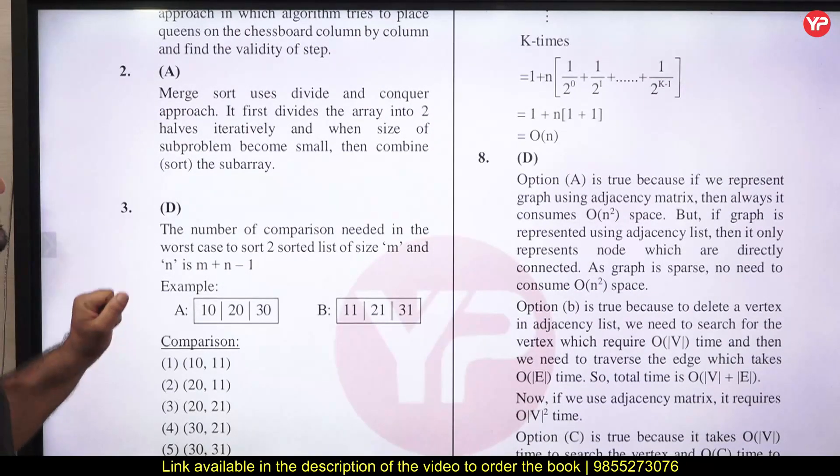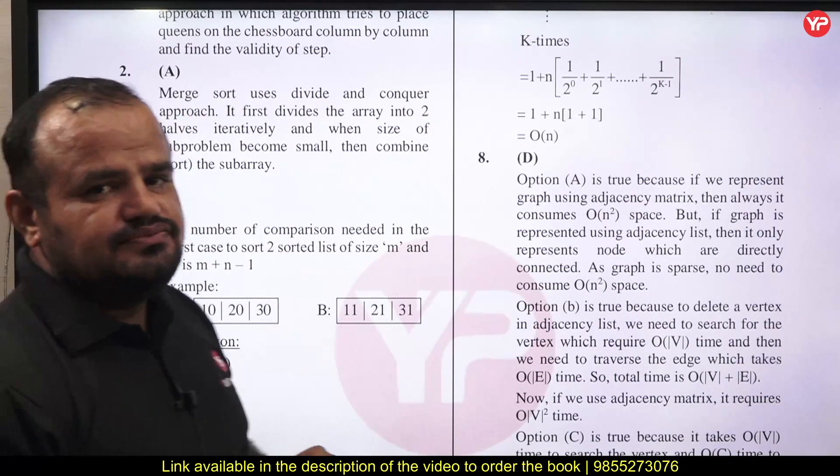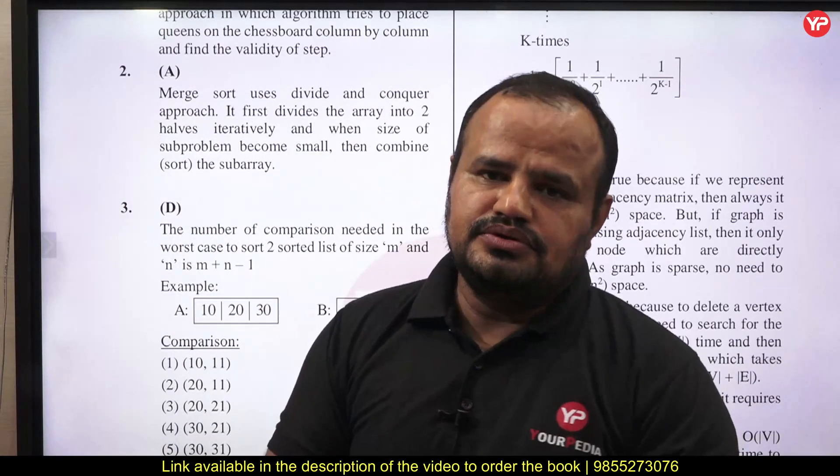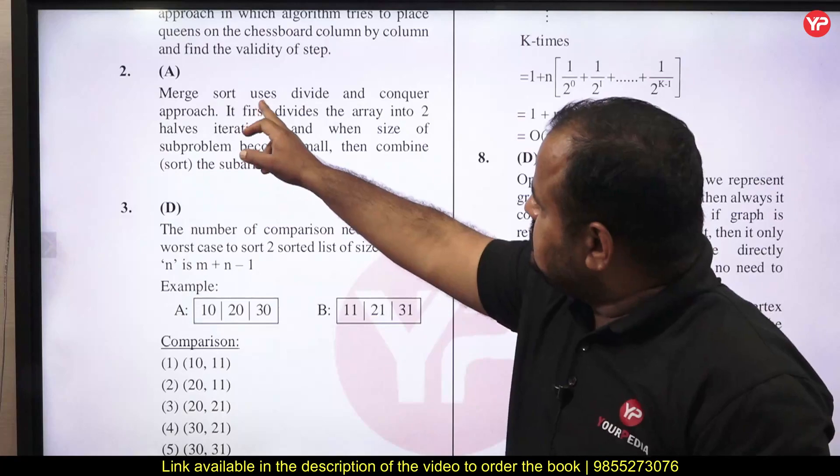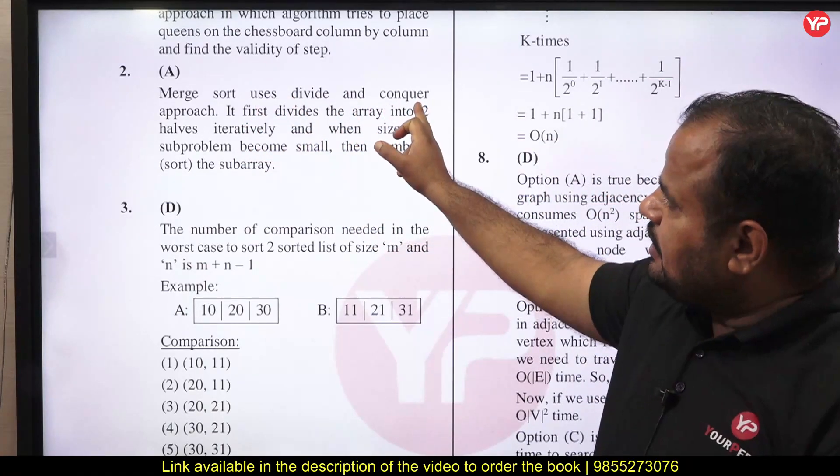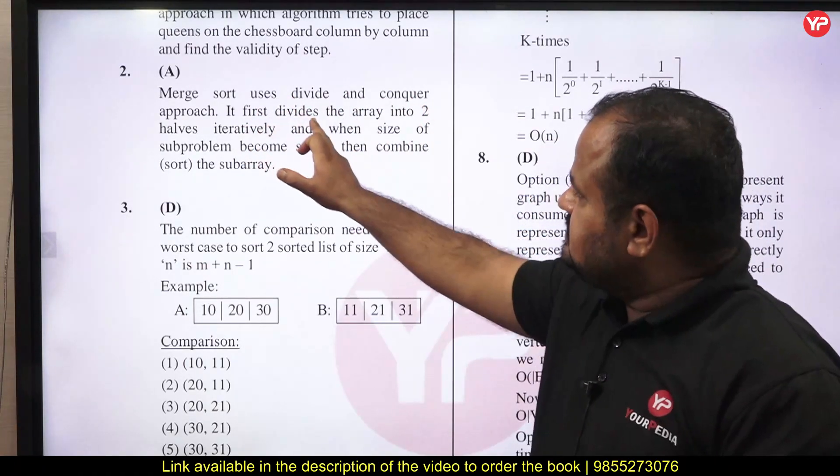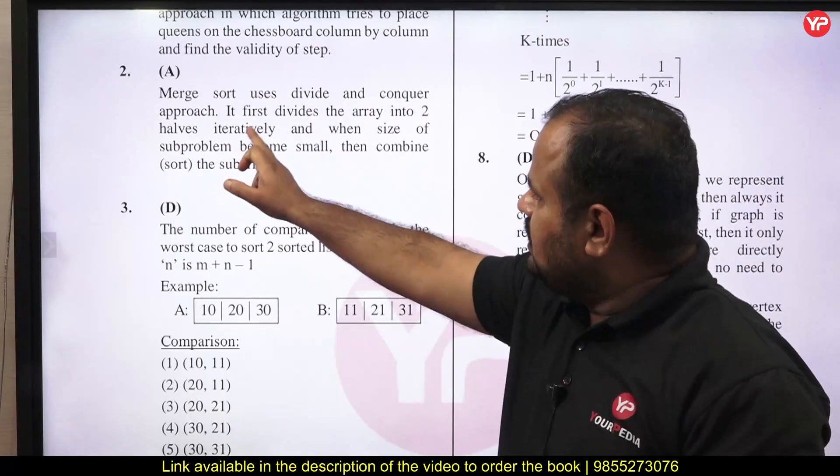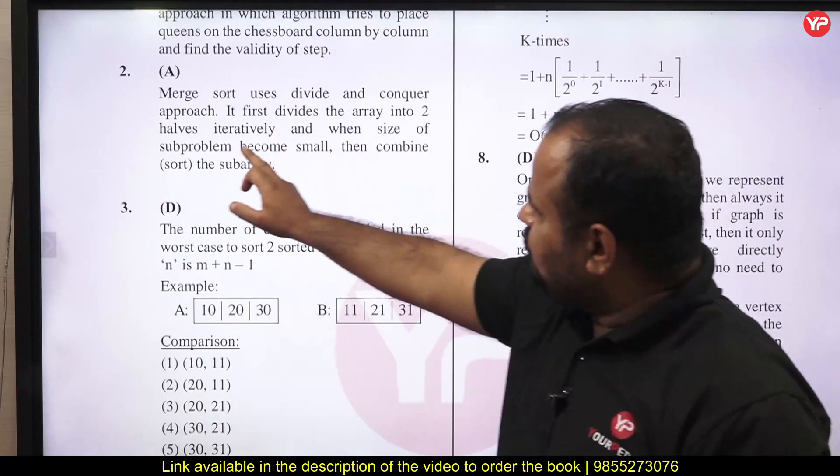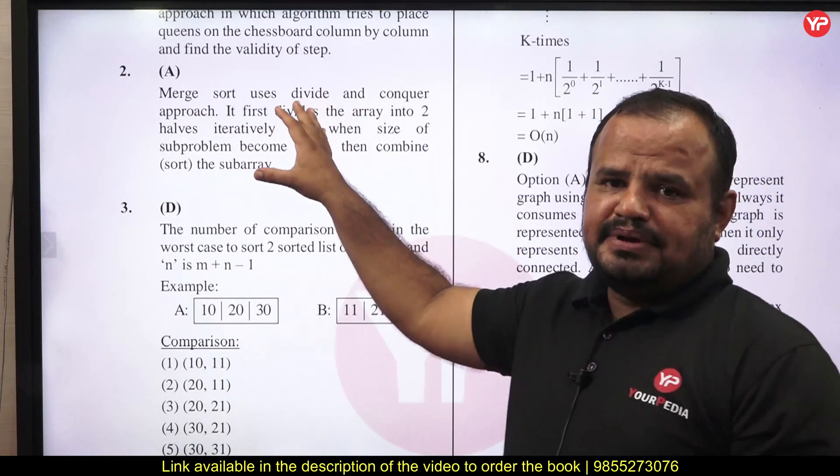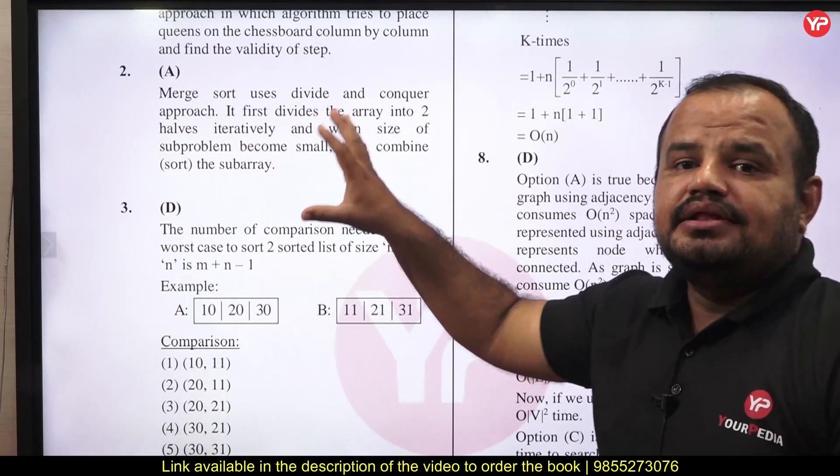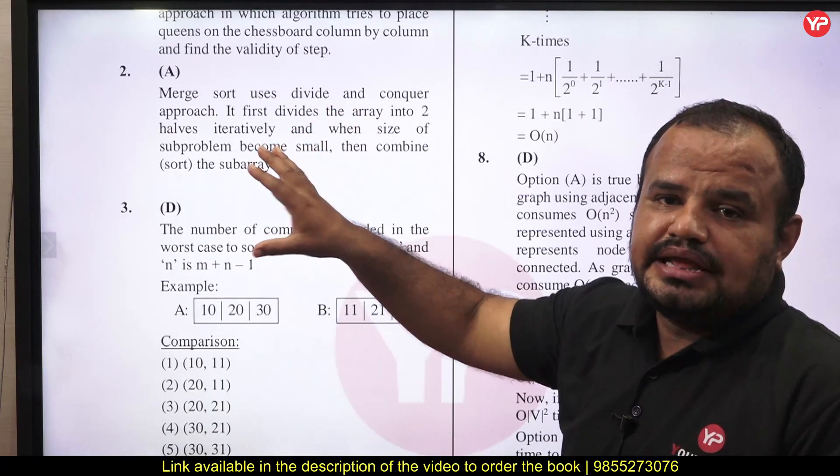If you want to find out the explanation, it covers a detailed explanation. Like, if we go with merge sort, the simple problem is: what type of technique does merge sort use? Here, merge sort uses divide and conquer approach. Why? Because it first divides the array into two halves iteratively, and when the size of sub-problem becomes small, then it combines. It gives a detailed explanation why it uses divide and conquer technique.